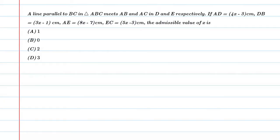Hello students, let's solve this question. A line parallel to BC in triangle ABC meets AB and AC at D and E respectively. If AD equals 4x minus 3 centimeters, DB equals 3x minus 1 centimeters, AE equals 8x minus 7 centimeters, and EC equals 5x minus 3 centimeters, then the admissible value of x is.